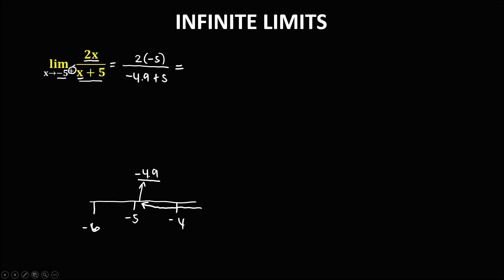Now take the sign of the numerator and denominator. For the numerator, 2 times negative 5 is negative 10, so the sign is negative. For the denominator, negative 4.9 plus 5 is positive, because positive 5 is greater than negative 4.9. So negative divided by positive is negative, and the limit is equal to negative infinity.